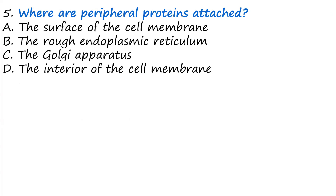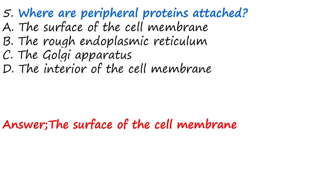Question five: Where are peripheral proteins attached? In the cell membrane we have two types of proteins: integral proteins and peripheral proteins. The options are: A, the surface of the cell membrane. B, the rough endoplasmic reticulum. C, the Golgi apparatus. D, the interior of the cell membrane. The answer is the surface of the cell membrane, as peripheral proteins are superficially attached there.